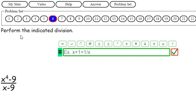It looks like perform the indicated division. Oh man, what is that? So we've got x to the 4th minus 9 over x minus 9. Well, we'll take a shot at it.